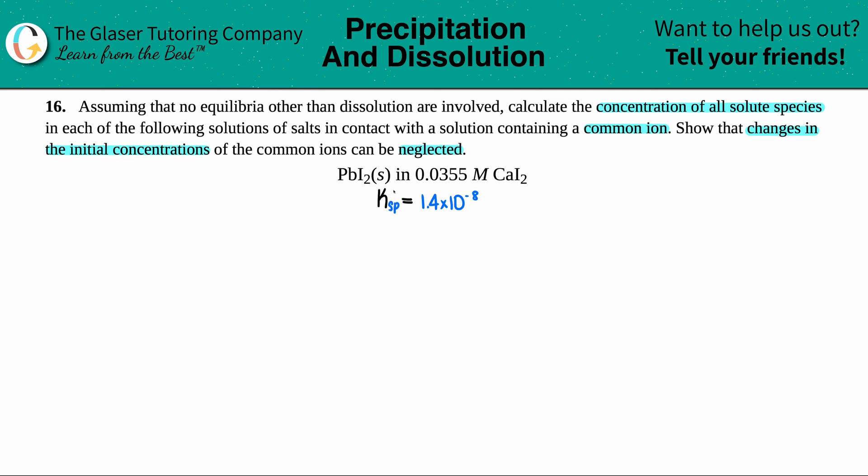This question cannot be done unless we knew the solubility product of the solid, the Ksp, and it's always going to be of the solid. In this case, I went to the back of the book to find out what the Ksp value of PbI₂ was: it's 1.4 times 10 to the negative eighth.